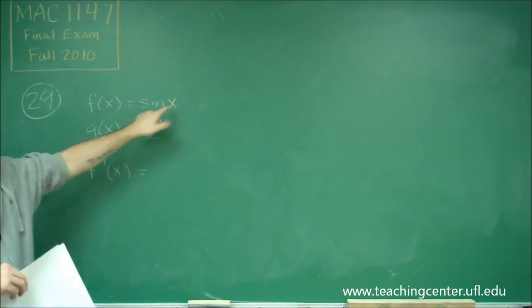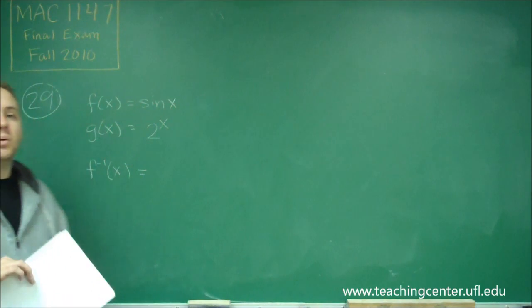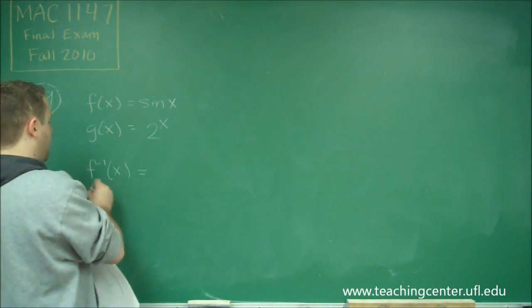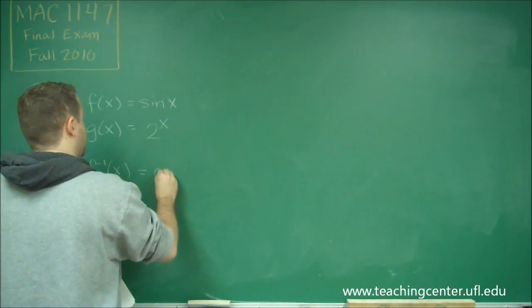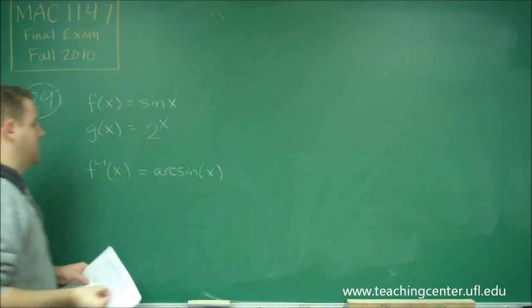Because if we had x equals sin of y, to solve all we would have to do is the inverse sine of both sides. So our inverse function of f is just going to be arc sine of x.